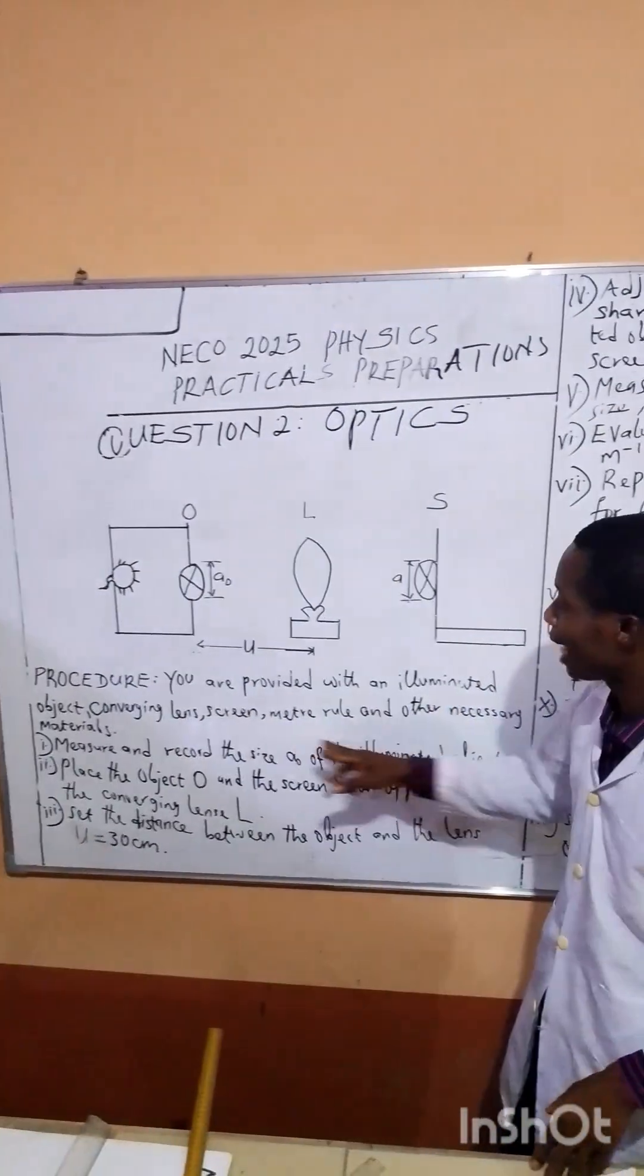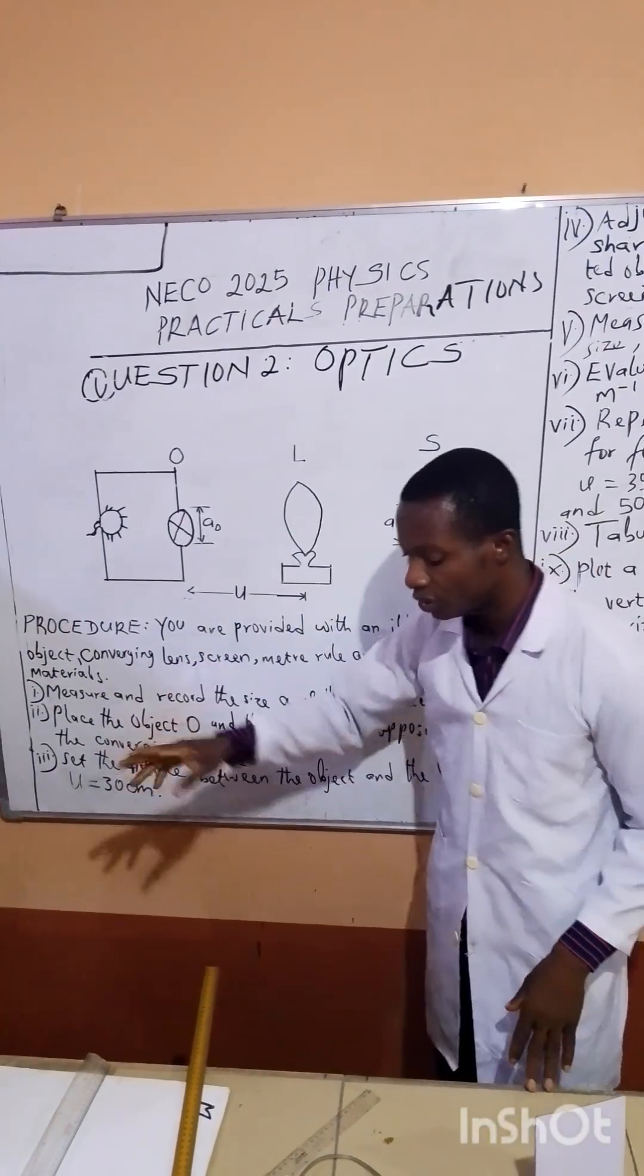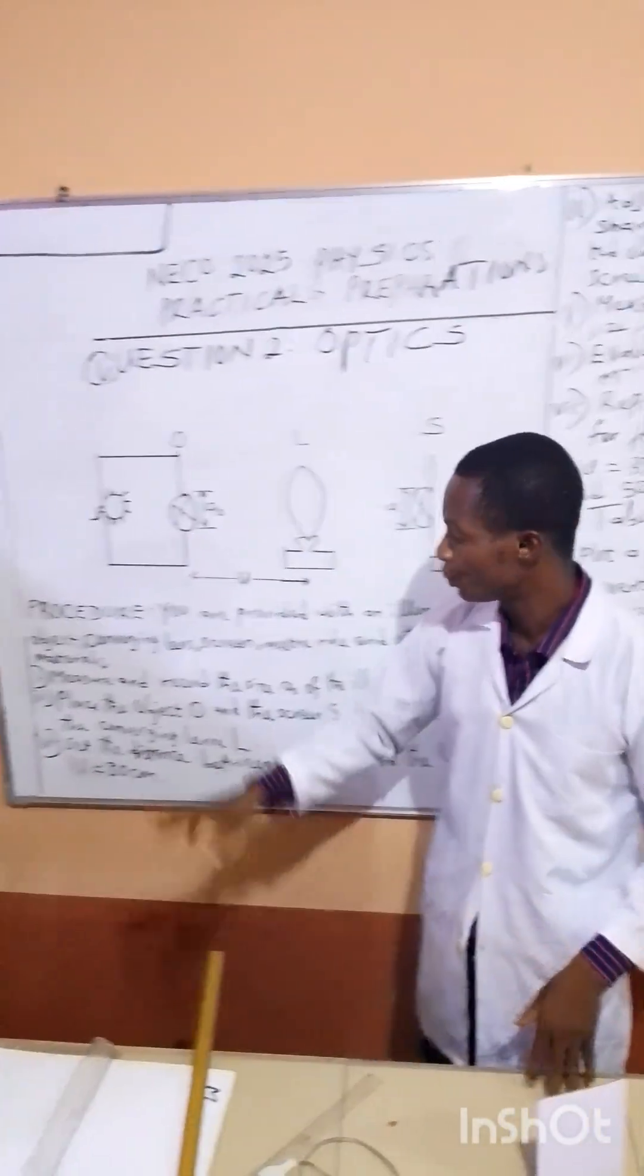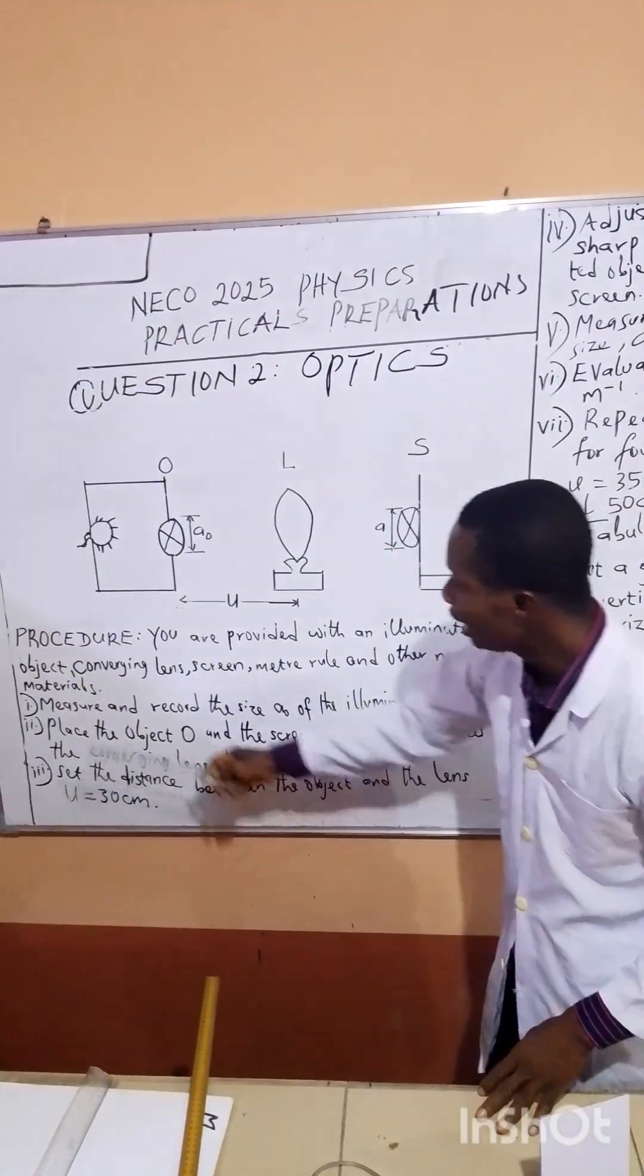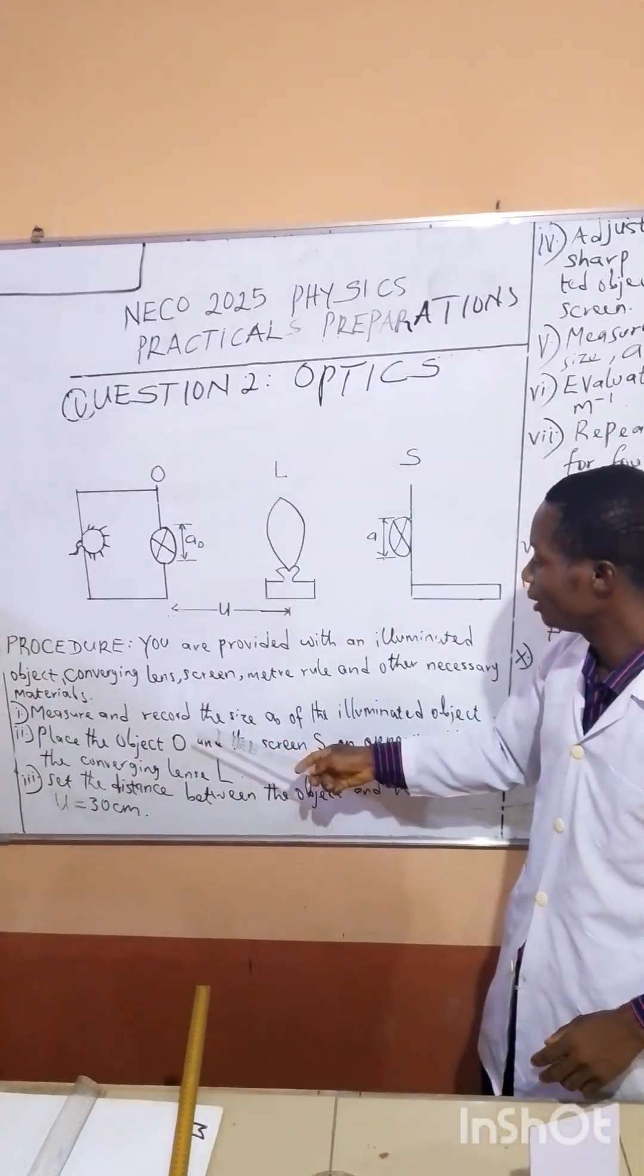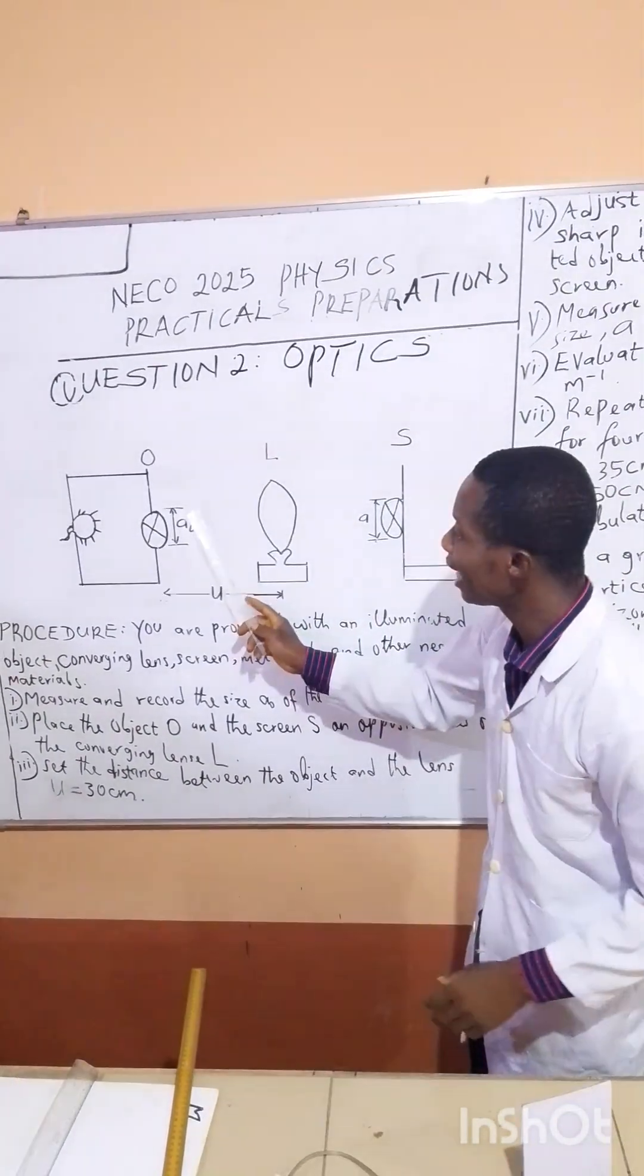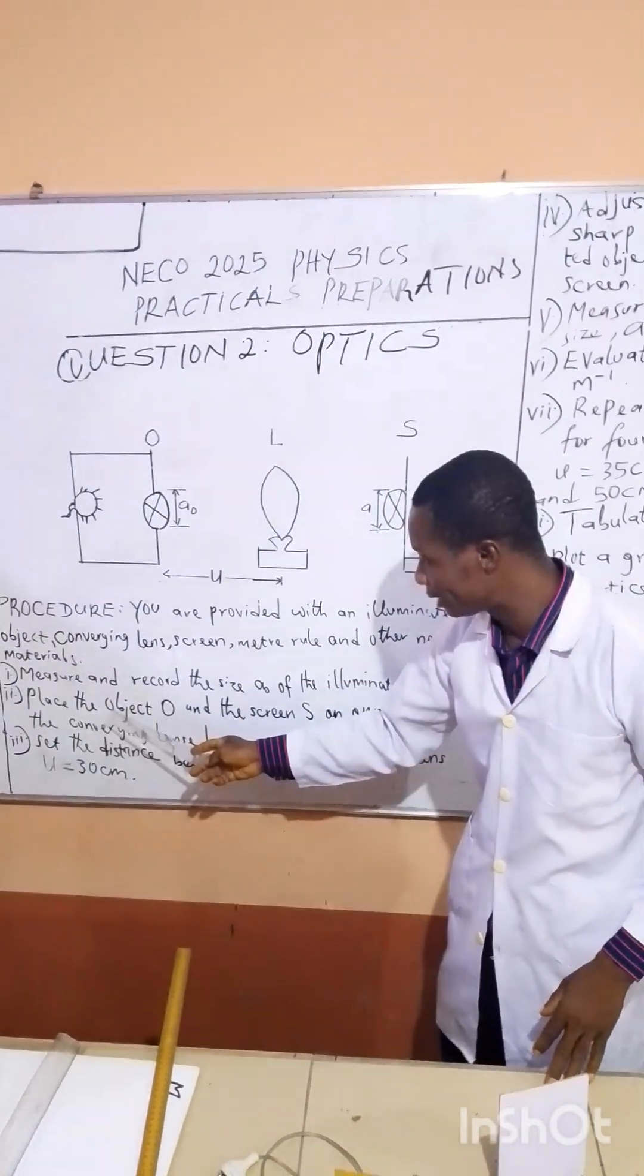You are provided with an elevated object, converging lens, screen, metal rule and other necessary materials. Now, what are the instructions? Measure and record the size of the elevated object. This is the size of the elevated object, so you will measure it and record it.